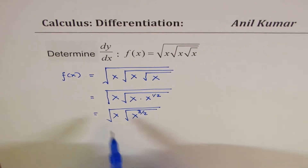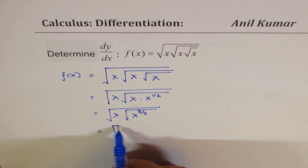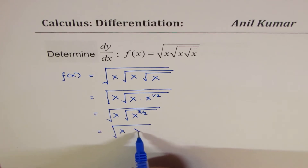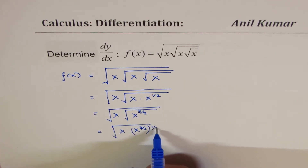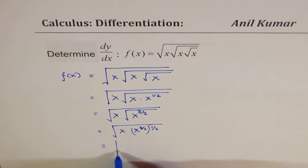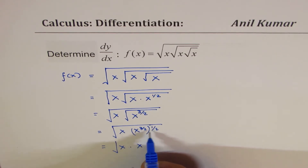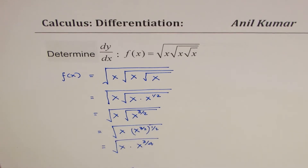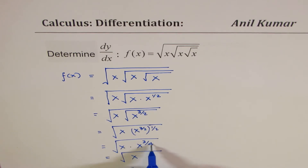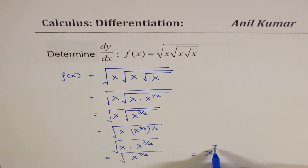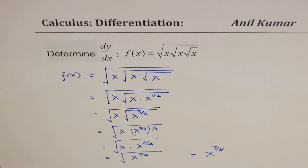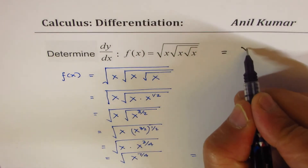We have x^(3/2) and we need to take the square root of that, which means raising it to the power of 1/2. So it becomes x^(3/2) to the power of 1/2, which equals x^(3/4). We then have the product of x and x^(3/4), giving x^(3/4 + 1) = x^(7/4). Taking the square root of that gives x^(7/8). So the original expression simplifies to x^(7/8).